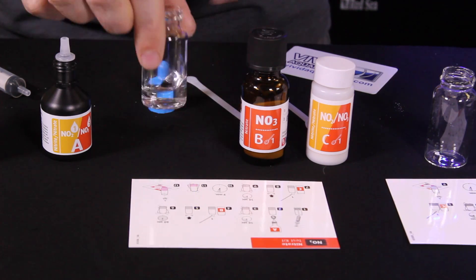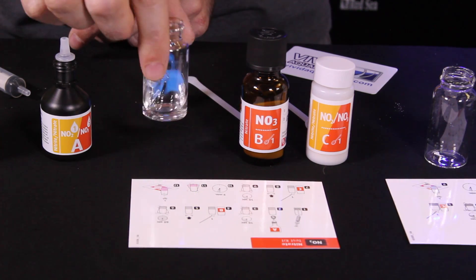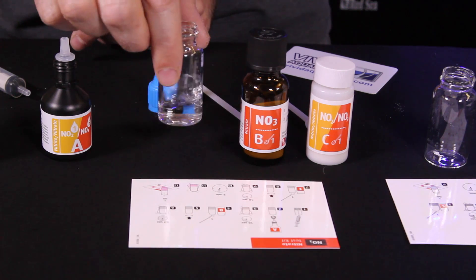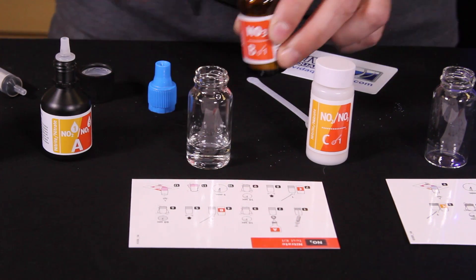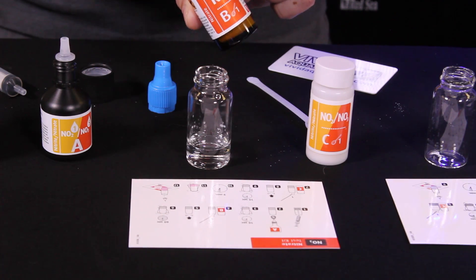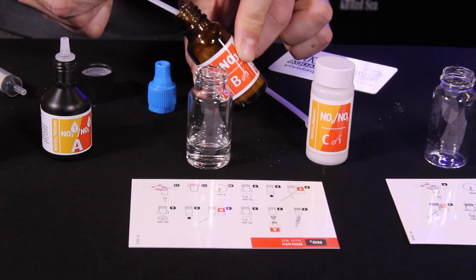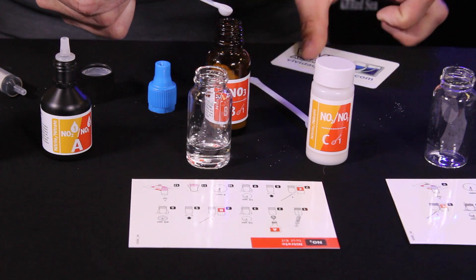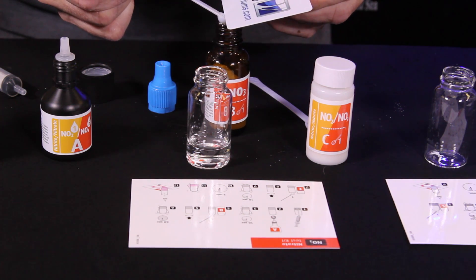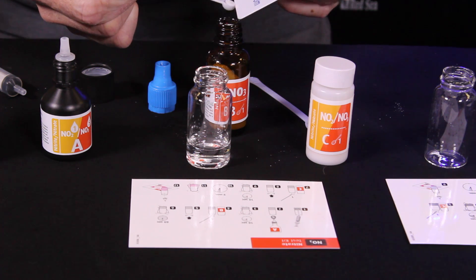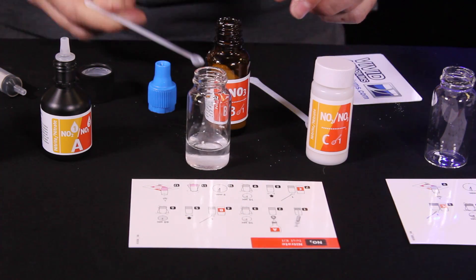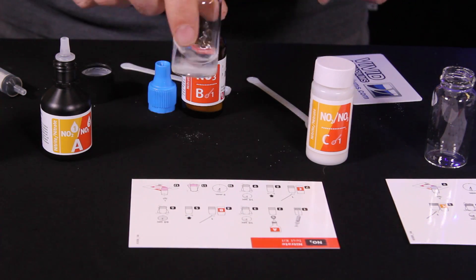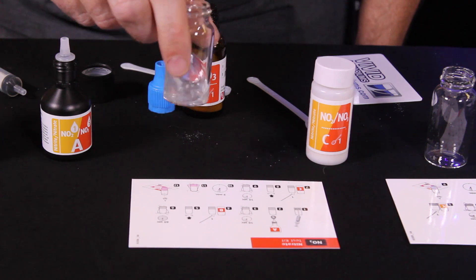Now per the instructions we're going to swirl that for 10 seconds. And now we need to do a level scoop of reagent B. Again, I'm going to use my card to kind of level that off and make sure that I am getting a level scoop.